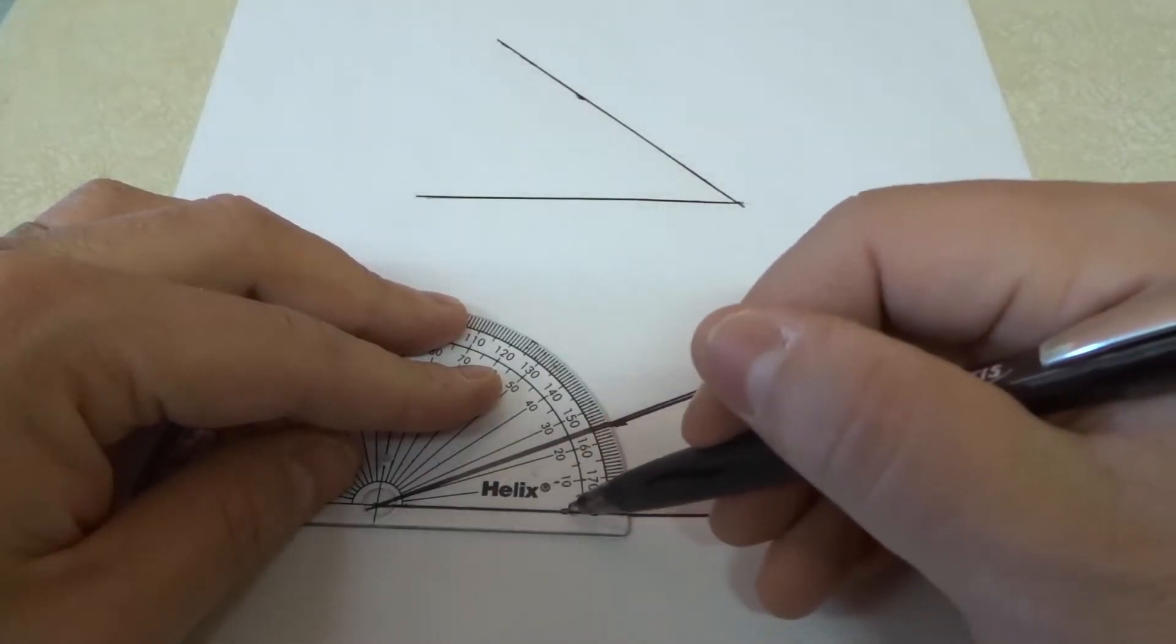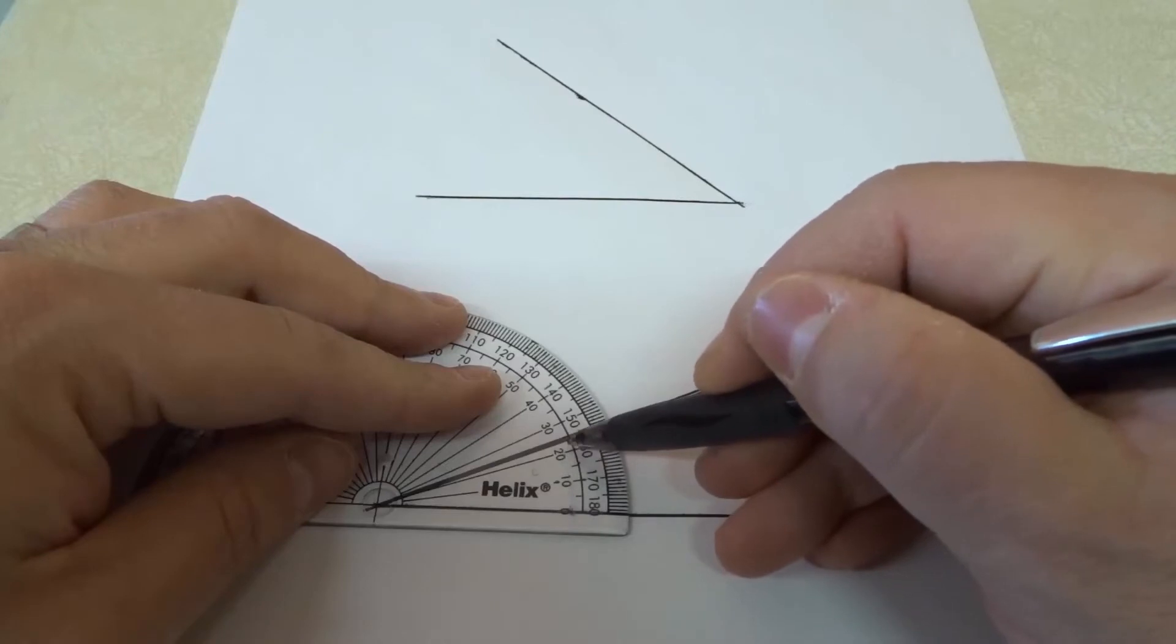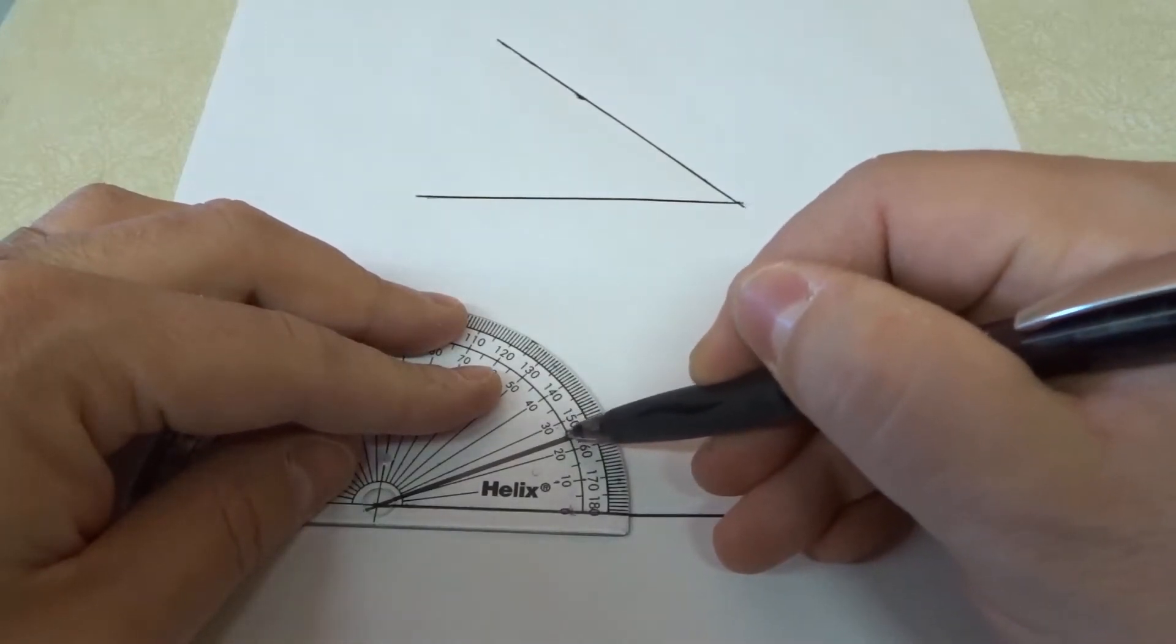And as you can see right here, if I start at zero and I work my way up, this angle is about halfway between 20 and 30. So the angle is about 25 degrees.